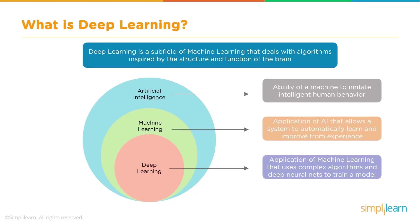Deep learning is considered to be a part of machine learning. This diagram very nicely depicts what deep learning is. At a very high level, you have the all-encompassing artificial intelligence, which is more a concept than a technology. Under the hood is actually machine learning and deep learning. Machine learning is a broader concept, and deep learning is a subset of machine learning.